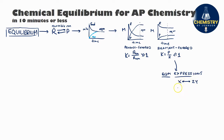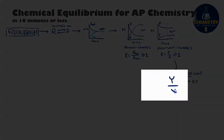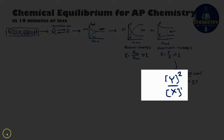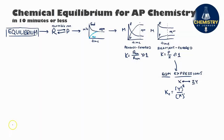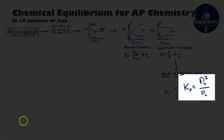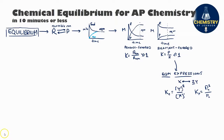Here are some additional details on writing equilibrium expressions. If my reaction is X changing into 2Y, I write the equilibrium expression with Y on top and X on the bottom. As long as X and Y are aqueous, I use their molar concentrations at equilibrium. Coefficients like the 2 in front of Y become exponents in the expression; X has a coefficient of 1, so it's raised to the first power. The equilibrium constant is capital K, often written as Kc, where the 'c' represents concentrations. If X and Y were both gases, you could write the expression using partial pressures and call it Kp.